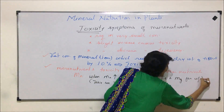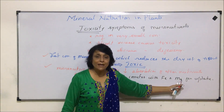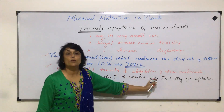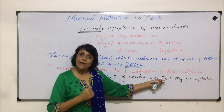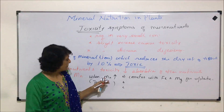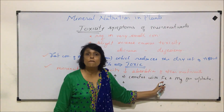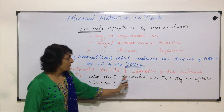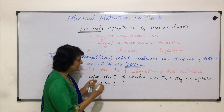First, manganese competes with iron and magnesium for uptake. When manganese is present alongside ferric iron and magnesium ion, there is competition for uptake. If manganese was not there, only ferric or magnesium would get absorbed fully, but with higher manganese concentration, approximately 50% of what is absorbed would be manganese, reducing the absorption of iron and magnesium by about 50%.